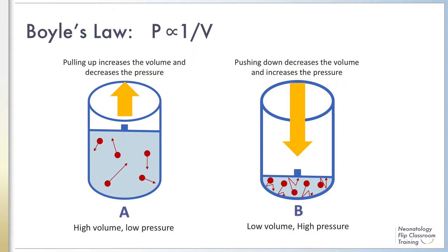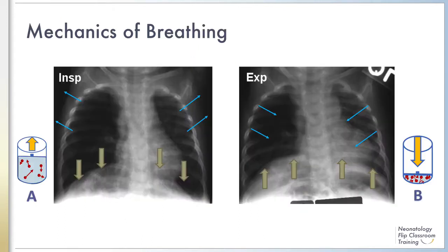This concept will help us understand the respiratory cycle. At rest, the diaphragm is dome-shaped and intercostal muscles are relaxed. The respiratory system, which includes the lungs and the chest wall, is in a steady state and there is no air movement or significant pressure differential between intrapleural and atmospheric pressure.